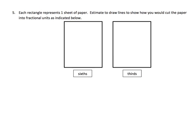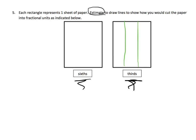This question says each rectangle represents one sheet of paper. Estimate — and I love that they say estimate, so don't give students rulers. We're drawing lines to show how to cut the paper into the fractional units below: sixths and thirds. Let's start with thirds. Students can use horizontal or vertical lines — both are correct. Here we'll do horizontal lines. There are our thirds.